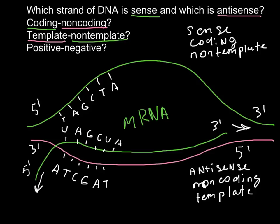And as you see here that antisense and noncoding and template, these two have a negative meaning and one positive. And here sense, coding, and nontemplate have one negative meaning and two positive meanings. So this gives us also that this strand is positive and this strand is negative. So this would be positive and this would be negative.